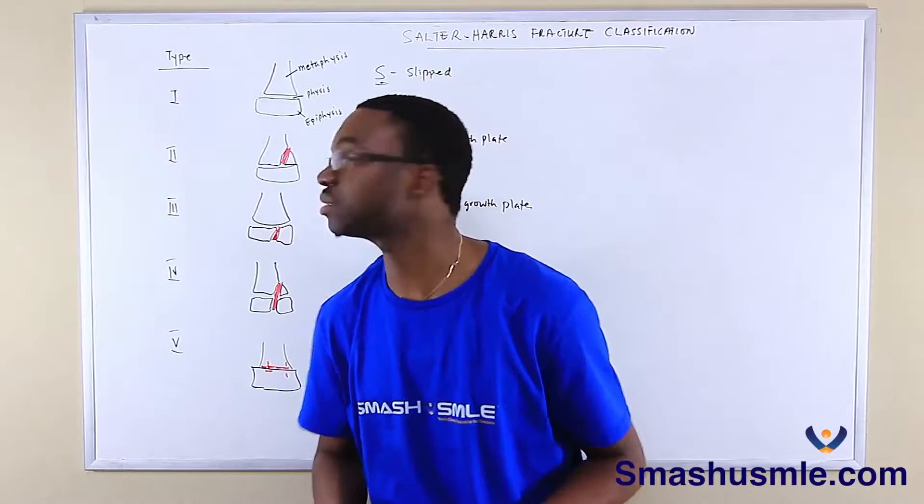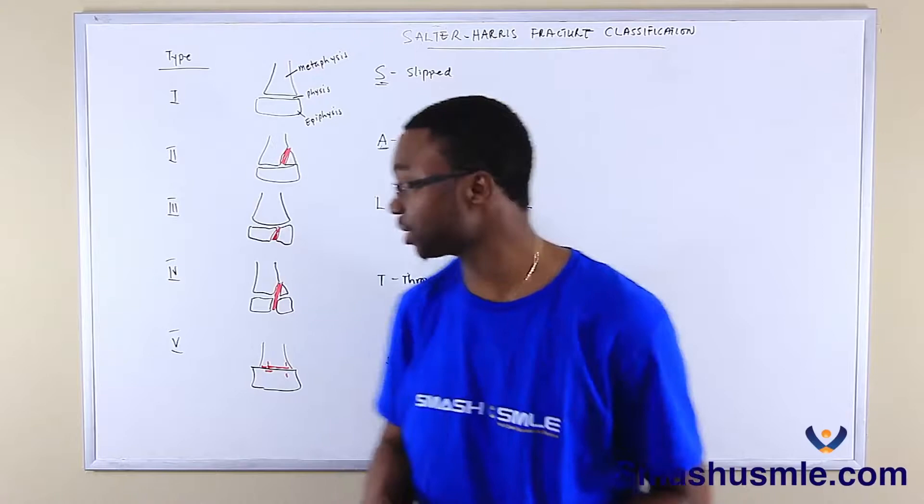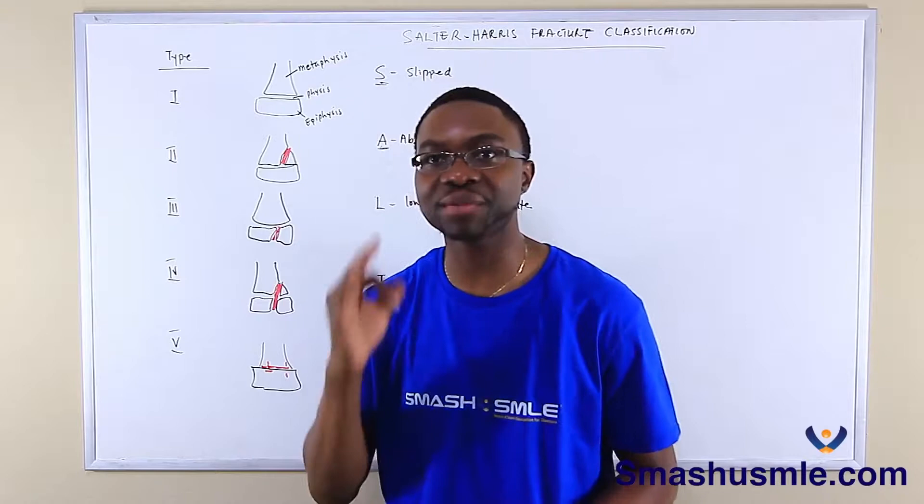Type three is low — lower than the growth plate, below the growth plate. L is for 'lower.' It's a fracture through the physis that goes through the growth plate and also through the epiphysis. That is type three.